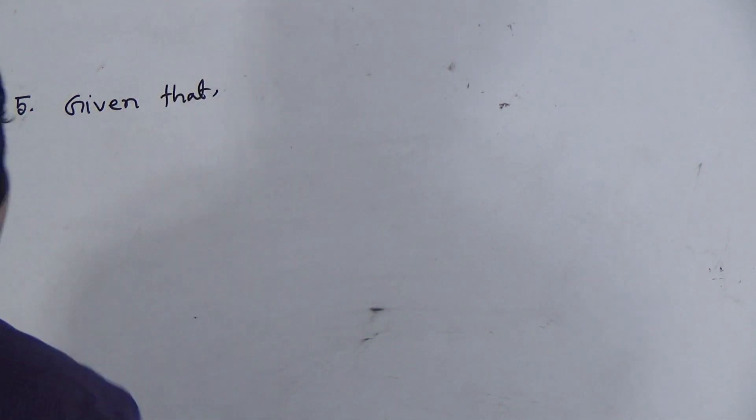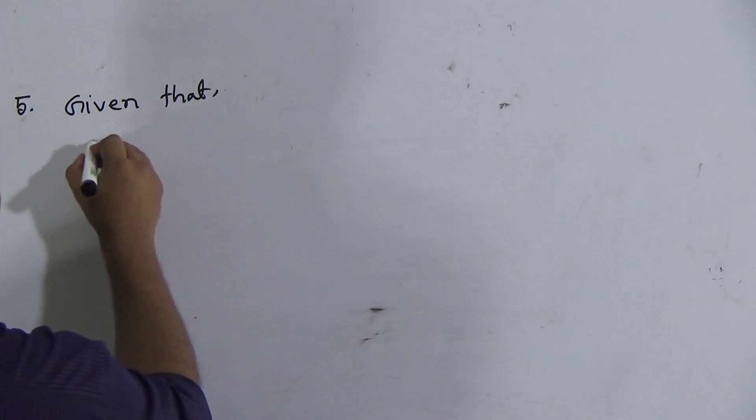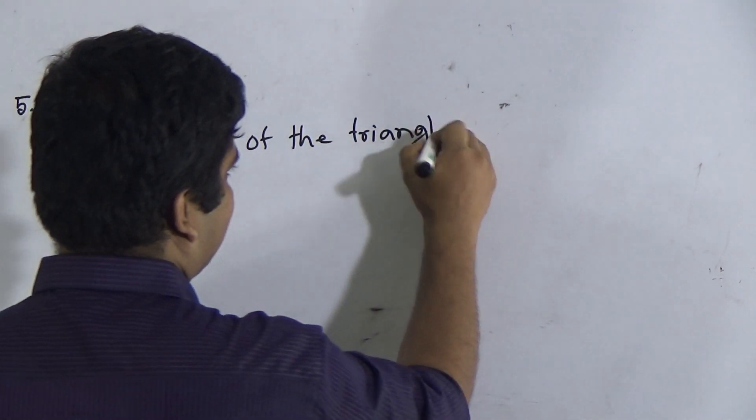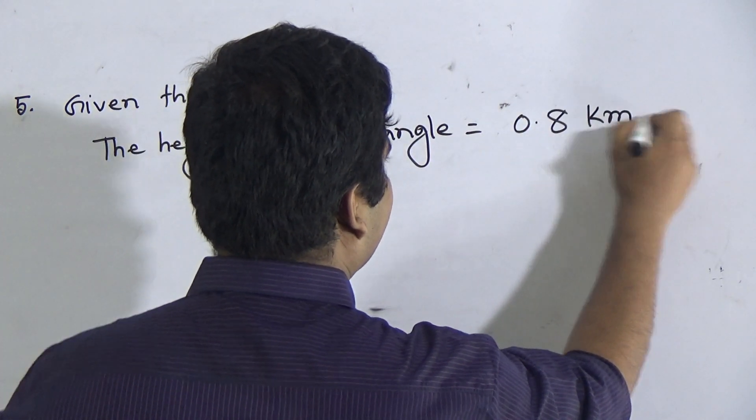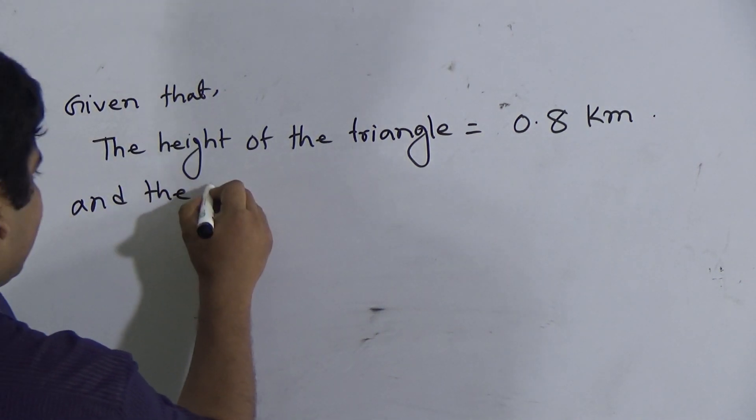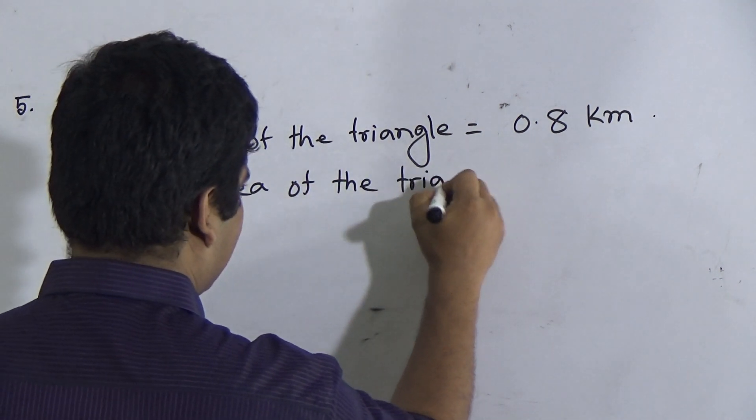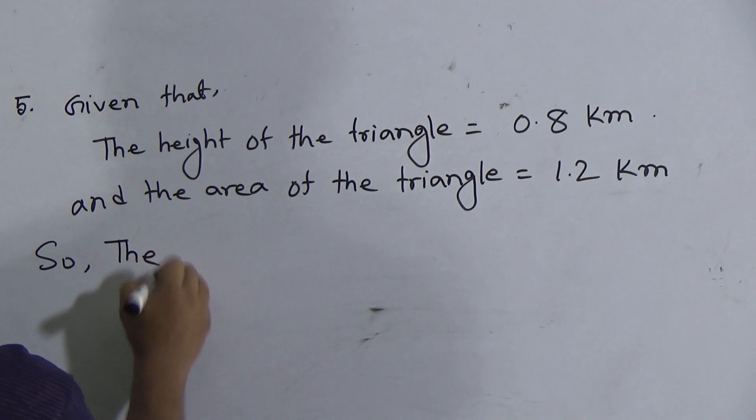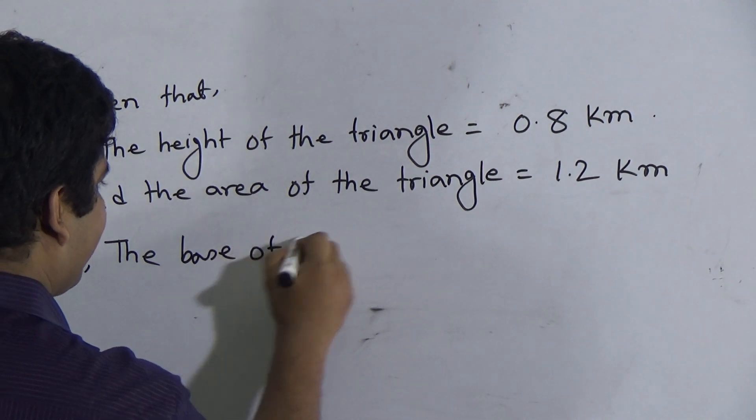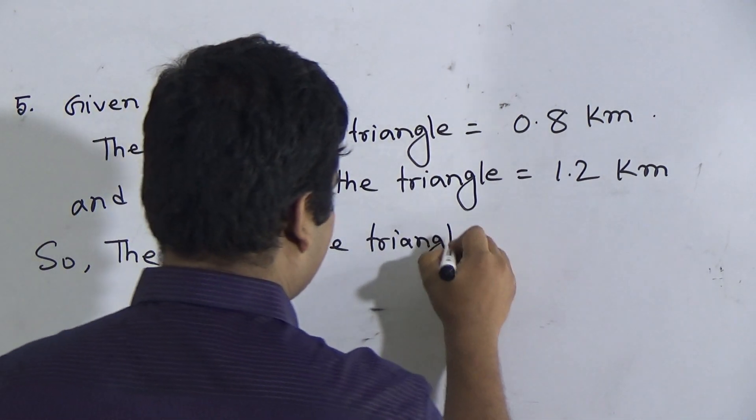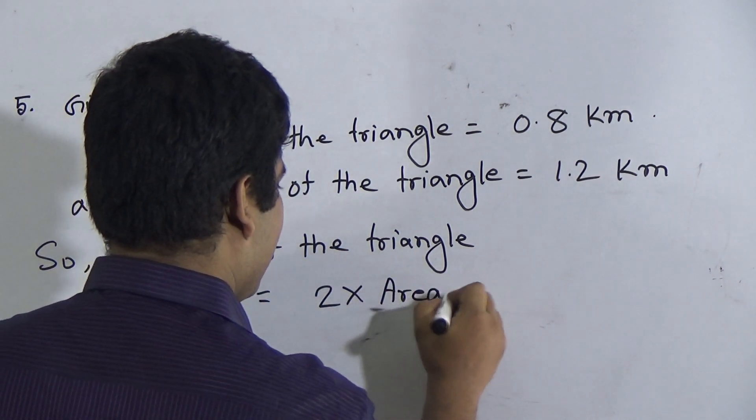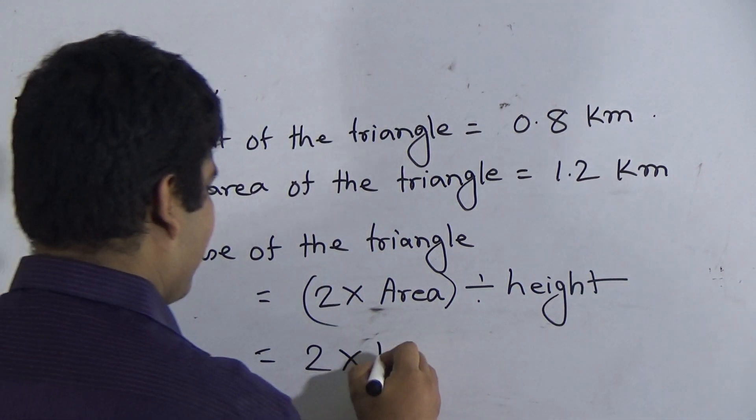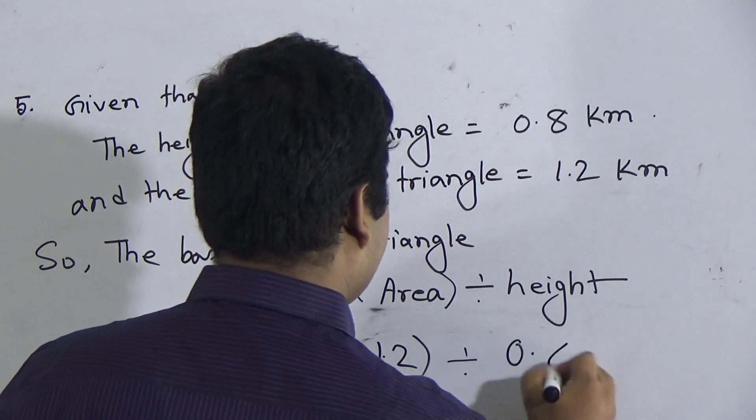Given that: Height of the triangle is 0.8 kilometer and the area of the triangle is 1.2 square kilometer. So, the base of the triangle is equal to 2 multiplied by area divided by height. So, here 2 times area is 1.2 and height is 0.8.